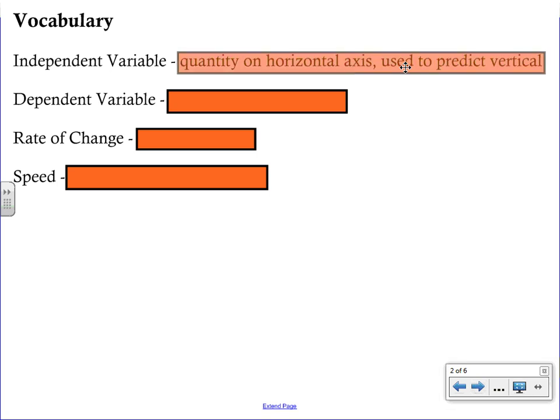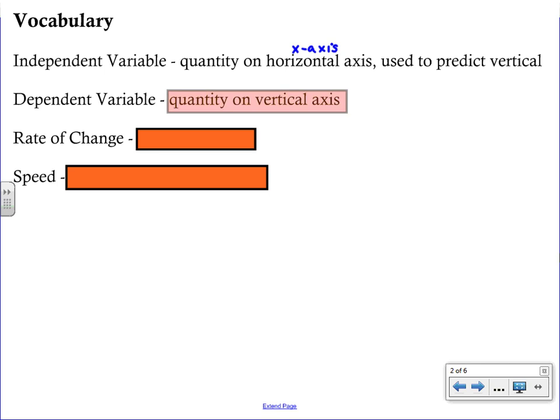An independent variable is what we refer to as the quantity on the horizontal axis. So as you think about your graphs, the horizontal axis is the x-axis and we use the x-axis or we use the x quantity to predict what is going to be on the vertical axis. And that's where the dependent variable comes in.